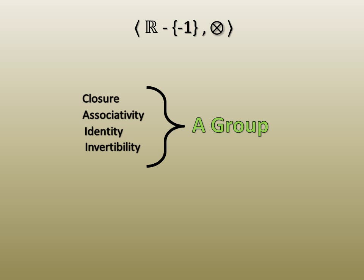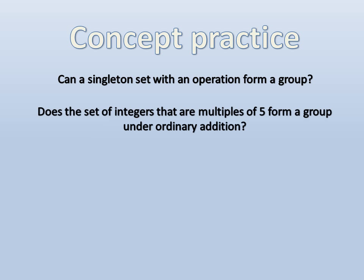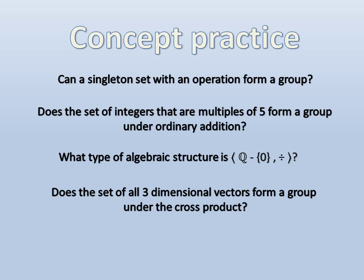Before moving on to part 2, test your understanding of the concepts with these questions. Can a singleton set, that is, a set containing only one element, form a group? Does a set of integers that are multiples of 5, form a group under ordinary addition? What type of algebraic structure is a set of rational numbers excluding 0 coupled with ordinary division? Does a set of all three-dimensional vectors, having real values for their components, form a group under the cross-product operation?